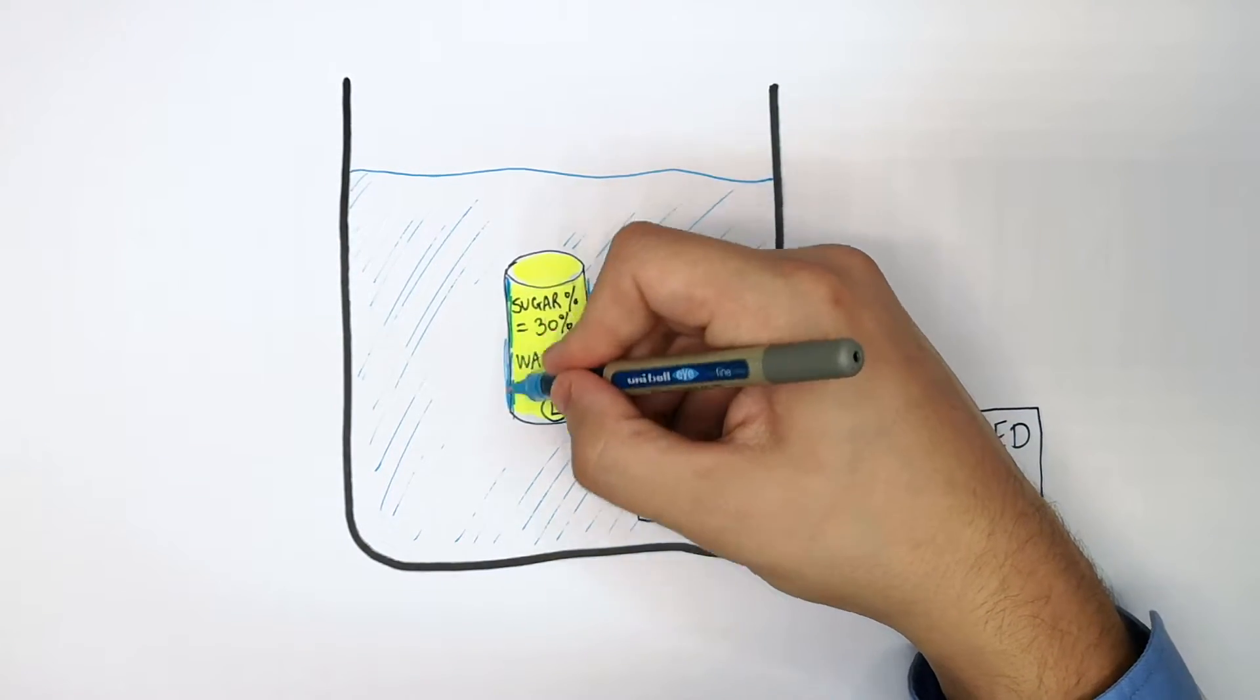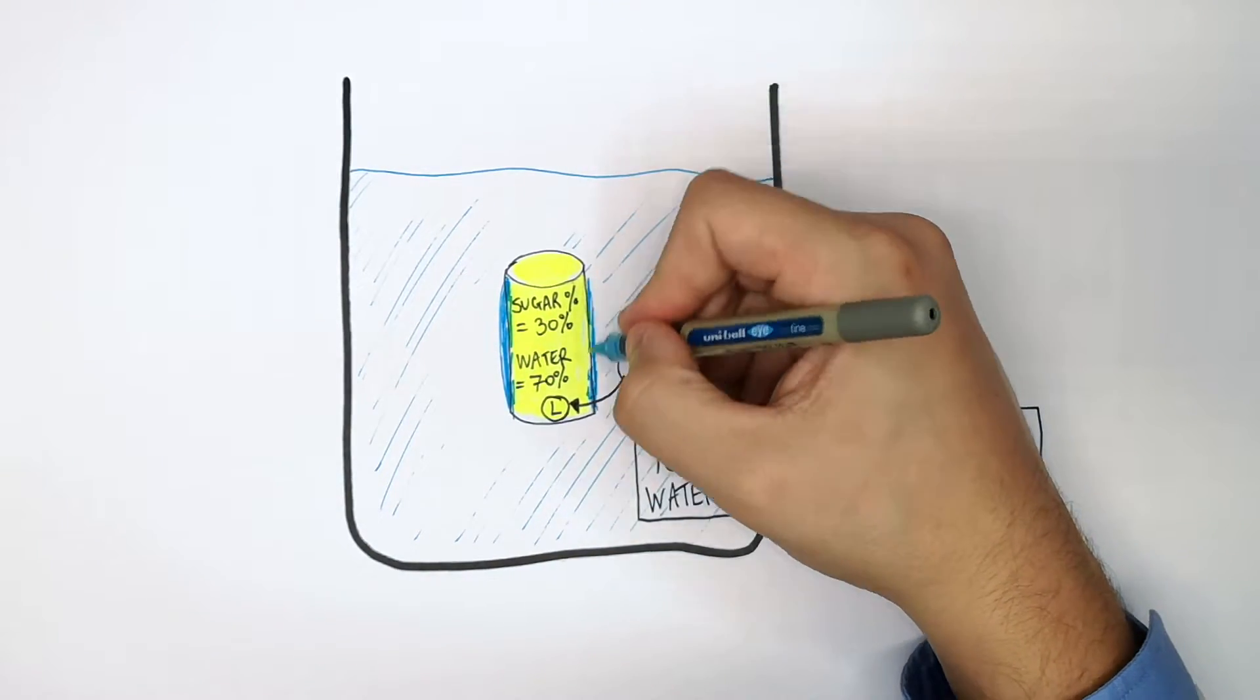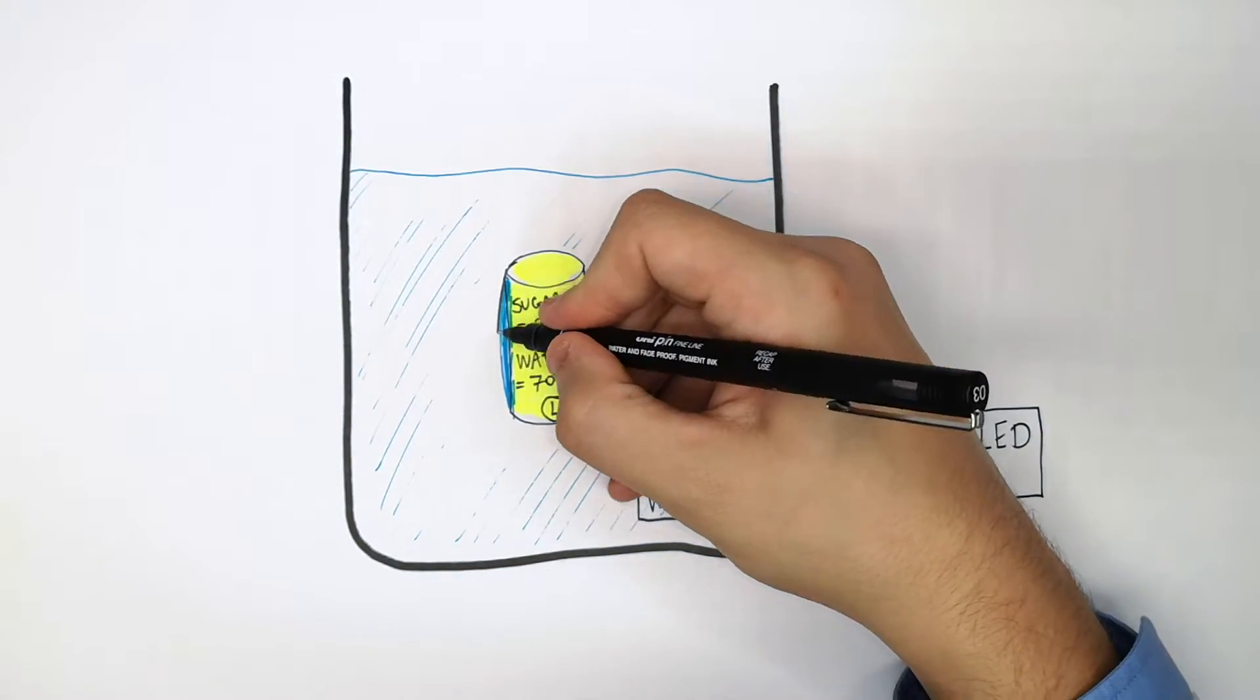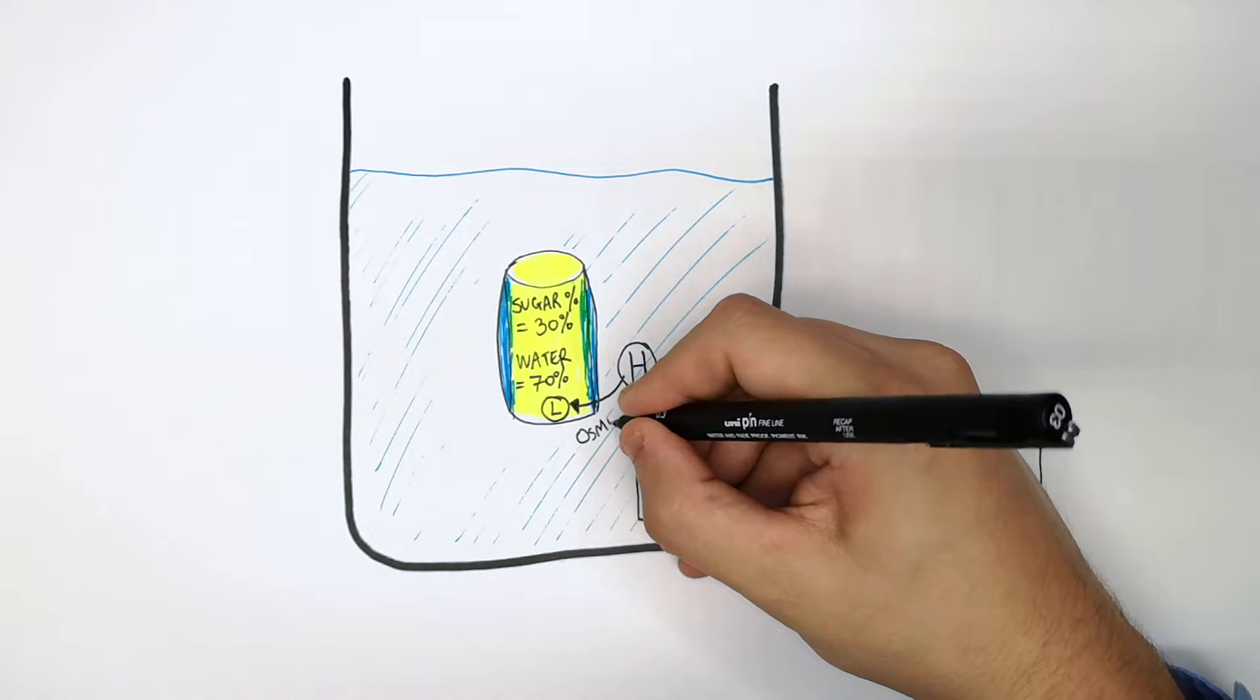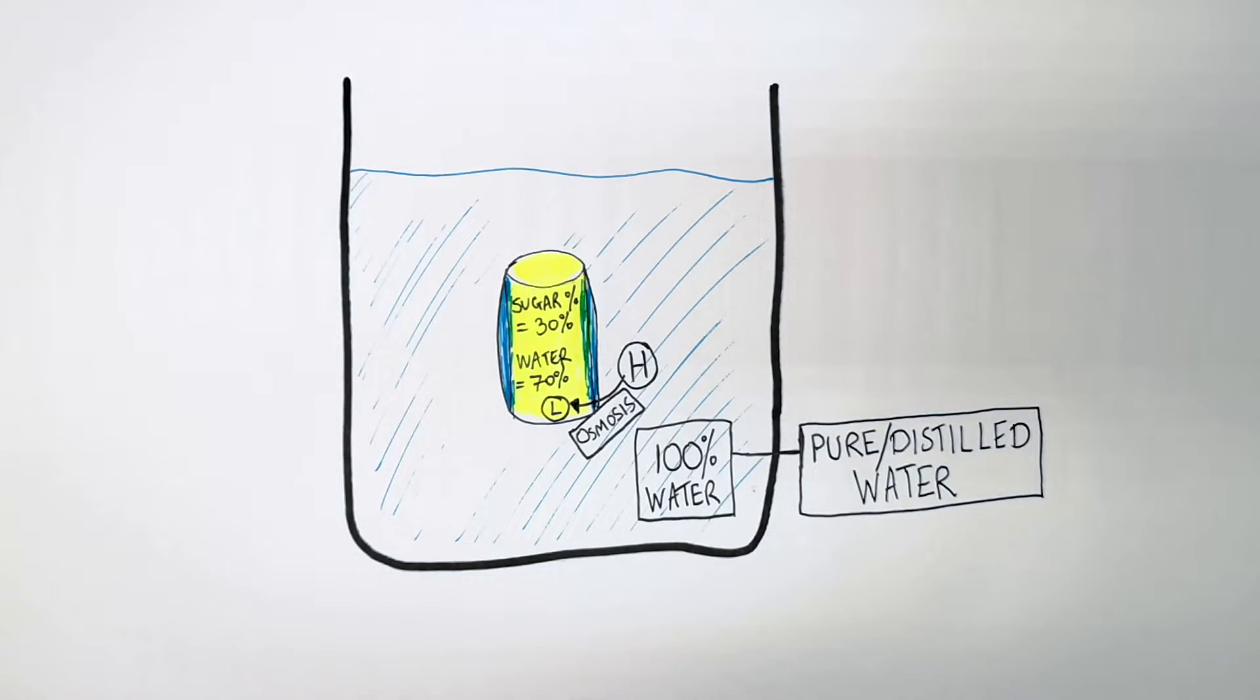So water is going to osmose into the potato. So the water is going to cause the potato to gain mass and appear larger. And what's really important now is you have to define osmosis, which is the movement of water from a high to low concentration through a partially permeable membrane.